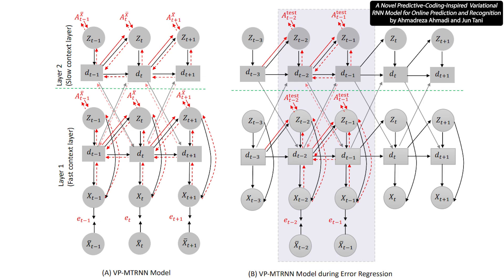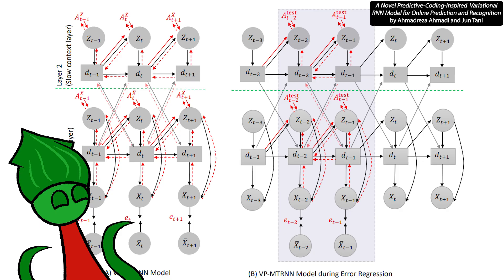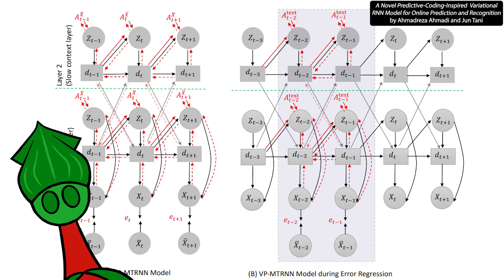This is a PVRNN, a predictive coding inspired variational recurrent neural network. Good lord, look at this thing. It's a neural network architecture my professor invented, and he really wants me to understand it. The only way I can possibly understand stuff like this is by trying to explain it, so let's go.